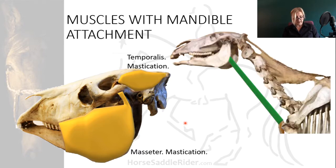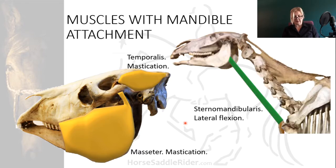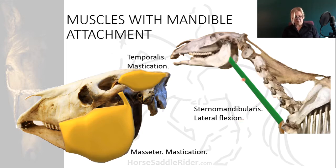Another muscle with insertion in the mandible is the sternomandibularis, responsible for lateral flexion of the entire neck, with its origins in the sternum.